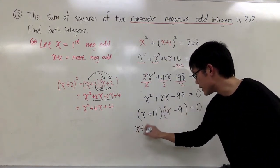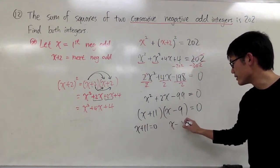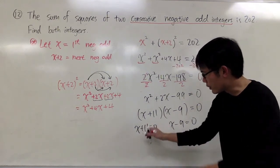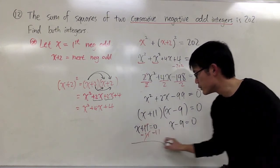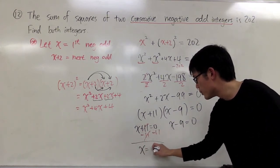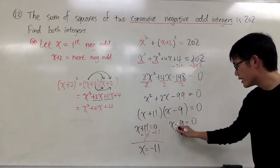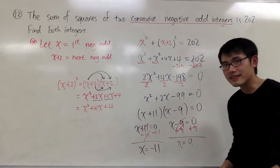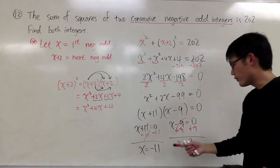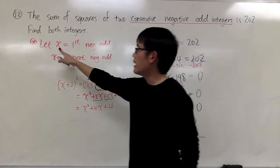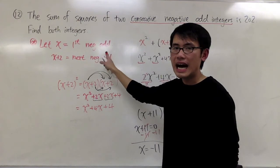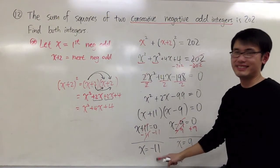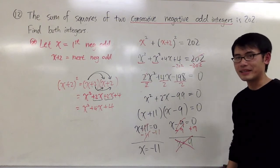Set the first parenthesis, x plus 11 equals to 0. Also, the second parenthesis, x minus 9 equals to 0. For the first equation right here, after we minus 11 on both sides, we get x is equal to negative 11. For the second one, adding 9 on both sides, we get x is equal to positive 9. And keep in mind, we have two answers. But keep in mind, I want x to be my first negative odd integer. I want x to be negative numbers. I want x to be negative 11. So, 9, it's not my x. It's not the x in this case.